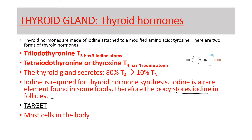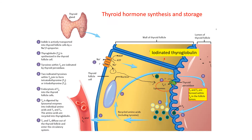The target organs of thyroid hormones are essentially all cells in the body. Follicular cells bring iodine into the body from the blood and attach it to a protein called thyroglobulin. From there, thyroglobulin with iodine is secreted into the colloid.